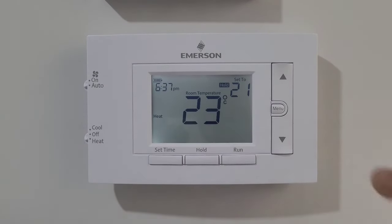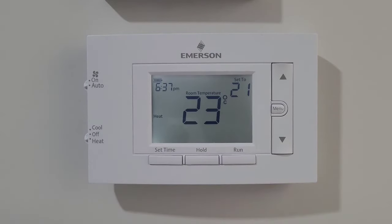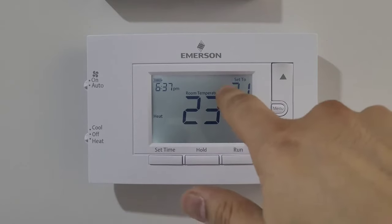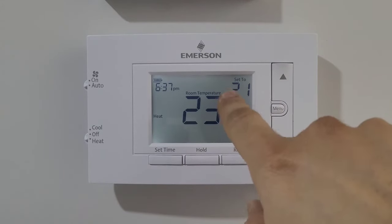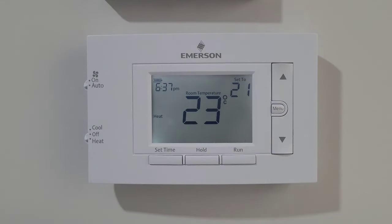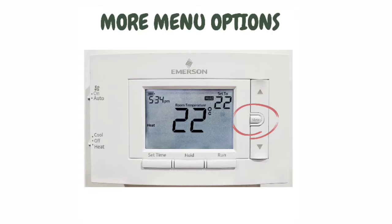If you want to run your program, the only thing you need to do is press the run button. When you press it, the hold sign will disappear and your thermostat will run as per your programmed temperatures and time options.